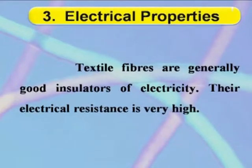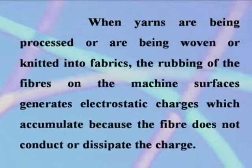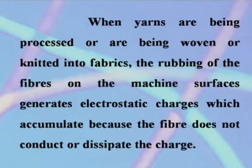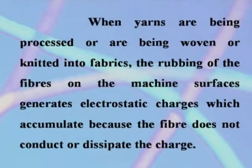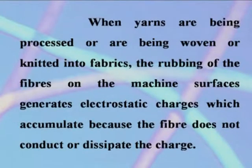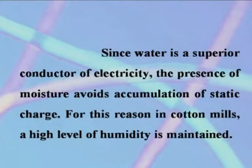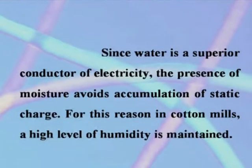Electrical Properties. Textile fibers are generally good insulators of electricity; their electrical resistance is very high. When yarns are being processed or are being woven or knitted into fabrics, the rubbing of fibers on the machine surfaces generates electrostatic charges, which accumulate because the fiber does not conduct or dissipate the charge. Since water is a superior conductor of electricity, the presence of moisture avoids accumulation of static charge. For this reason, in cotton mills, a high level of humidity is maintained.